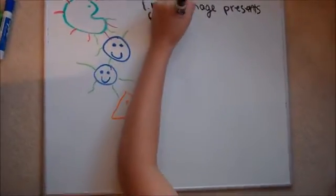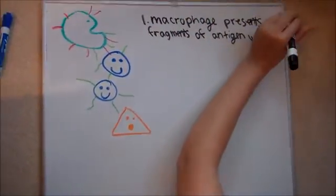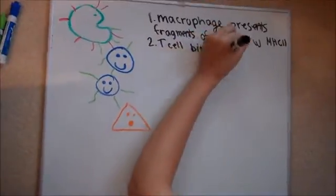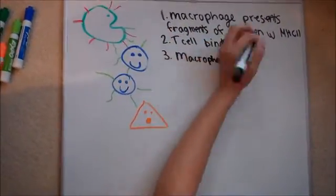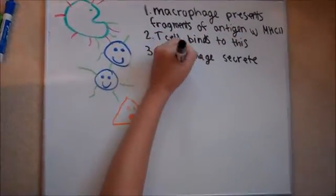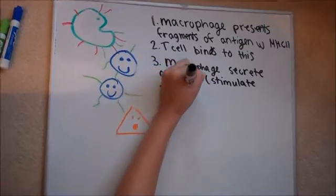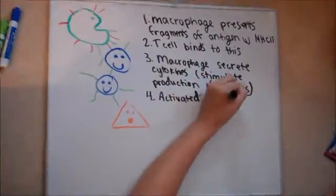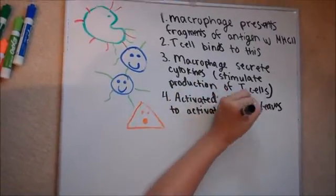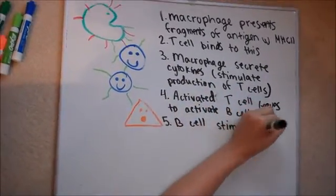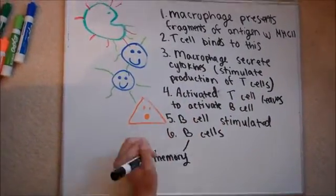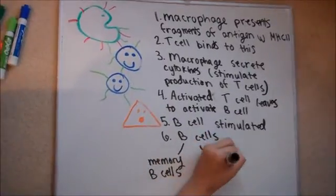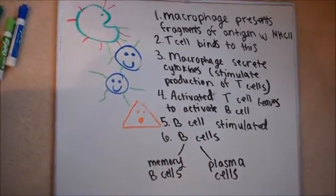Let's review that process one more time. The macrophage presents fragments of the antigen with MHC2. Then, the T cells bind to this. After this, the macrophage secretes cytokines, which stimulate the production of T cells. Next, activated T cells leave to activate B cells. Here, the B cells are stimulated. Once the B cells are stimulated, they either become memory cells or become plasma cells.